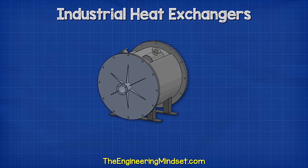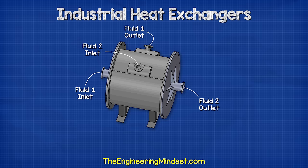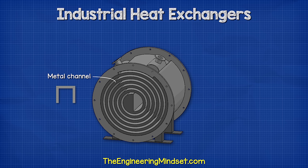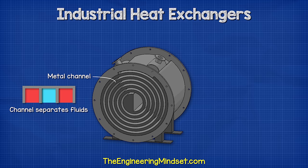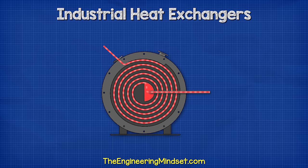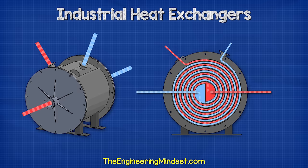Spiral heat exchangers look something like this. We have a flanged inlet on the front face with the outlet on the top, then another fluid's inlet also on top with its outlet on the rear face. Behind the end plates, two sheets of metal spiral together around the interior to form a channel through which the fluids flow. The channel completely separates the two fluids. The first fluid enters the heat exchanger, fills the chamber, flows around the channel, and exits. Meanwhile, the second fluid enters via the top, flows around the channel, into the chamber, and exits. The two fluids enter and exit at different temperatures.